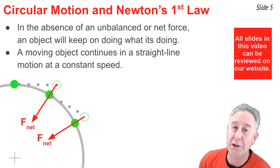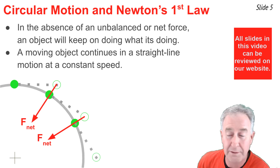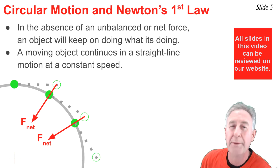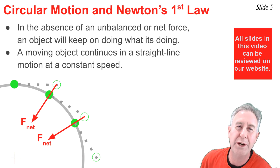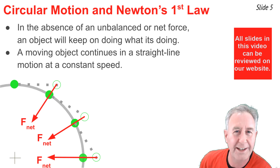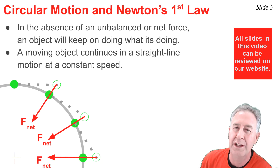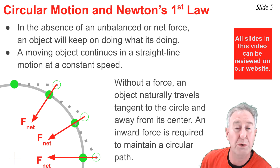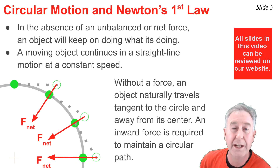Again, at the 2 o'clock position it would travel tangent to the circle in the absence of any force, but with an inward net force that pushes the object inwards towards the circular path, it would end up at the 3 o'clock position. The point is that without a force, an object follows a straight line path and travels away from the center of the circle.